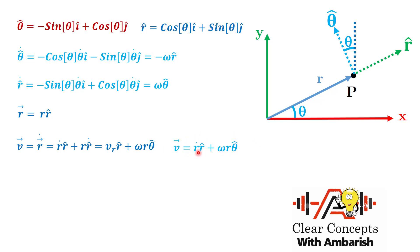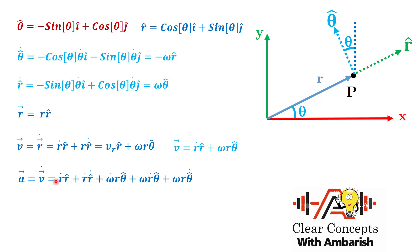Differentiating the full velocity vector, acceleration = v dot. From the first term: r double dot times r cap + r dot times r cap dot. For the second term omega r theta cap, using the three-function product rule: omega dot times r theta cap + omega r dot times theta cap + omega r times theta cap dot. Now I can substitute r cap dot = omega theta cap and theta cap dot = minus omega r cap.